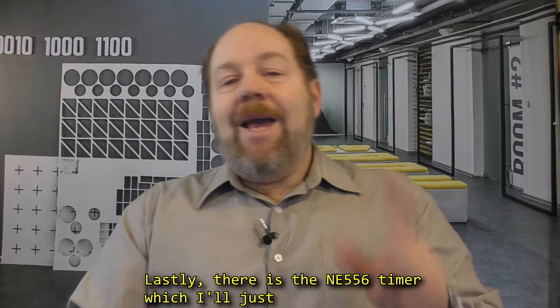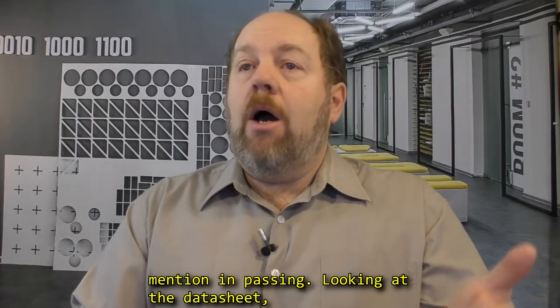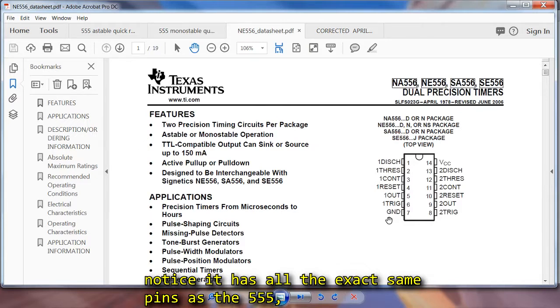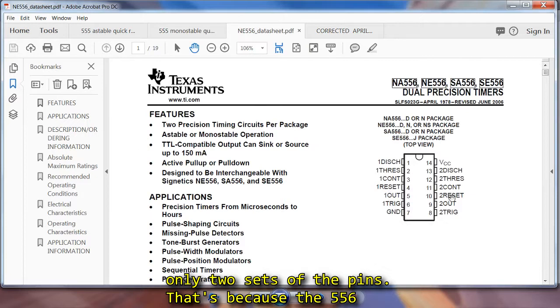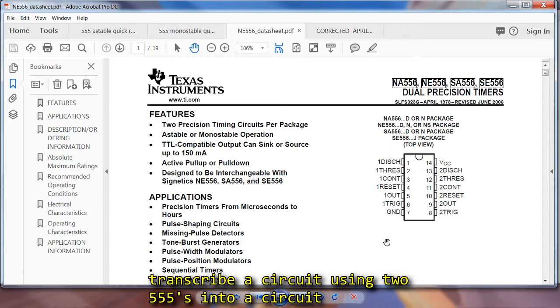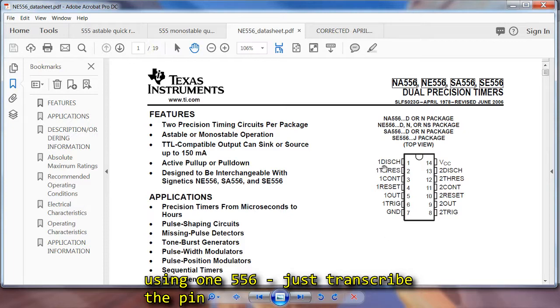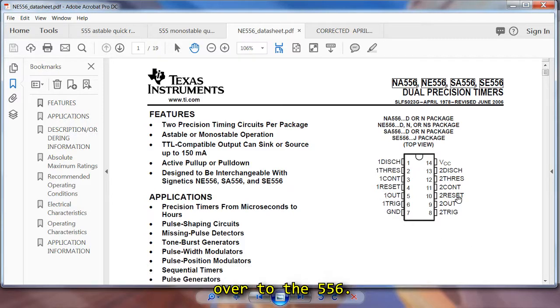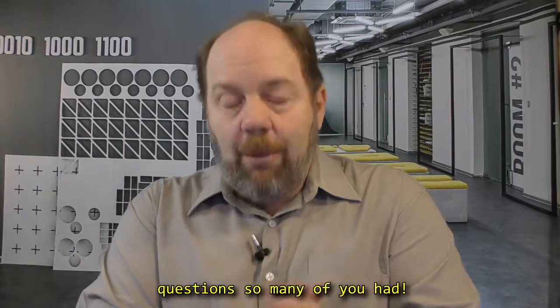Lastly, there is the NE556 timer, which I'll just mention in passing. Take a look at the data sheet, notice it has all the exact same pins of the 555, only two sets of pins. That's because the 556 is simply two 555 timers in one package. So you can transcribe a circuit using two 555s into a circuit using one 556. Just transcribe the pin designations of the original two chips to transfer over to the 556. Okay, I hope that helps and I hope that answers the questions that so many of you had.